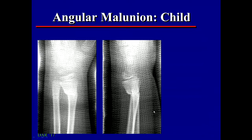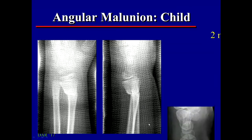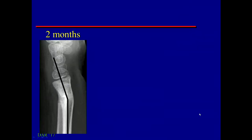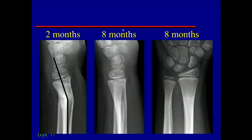Malunion by itself usually won't correct itself, but there is one exception: in young children, an angular malunion may correct itself. Here we have a distal radius fracture — it's angulated in the cast. Here it is at two months, healed out of the cast, still with angulation, but as the child grows at eight months later, we can see the bone is straightening out. That won't happen in adults.